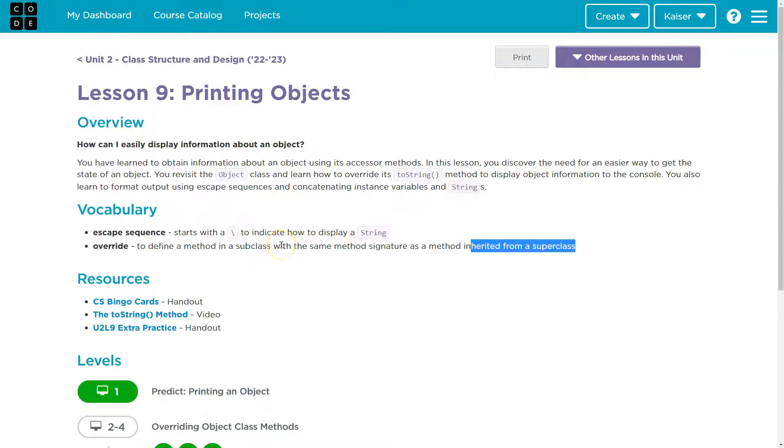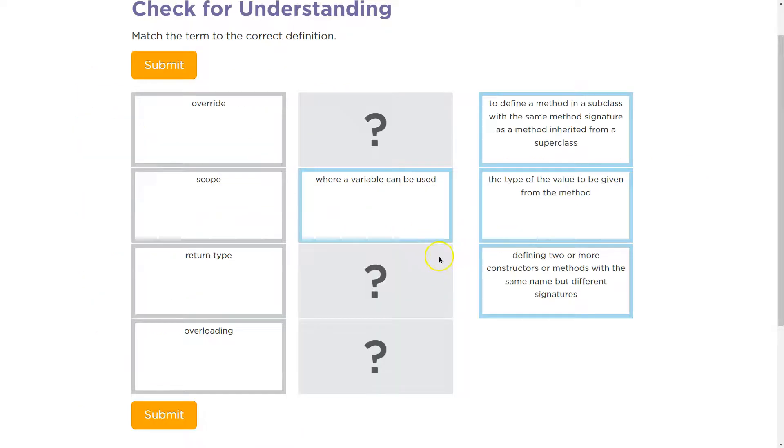Yeah, so if the class above it has the exact same method, we can define a new method and the method in the subclass will be used. That's what we just did with Cookie and Cake, and technically with Dessert as well. We're overriding the default class within Java.